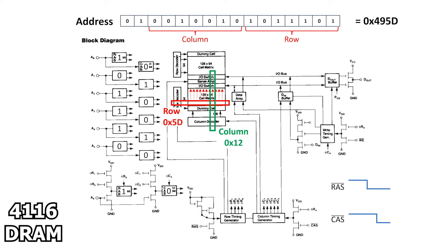Next, column 18 is selected, which is 12 hexadecimal, and the lower I/O switch associated with column 18 forwards this one bit of data, and only this one bit of data, to the output pin of the chip. We've just read the data in row 5D column 12, but we're not done yet.